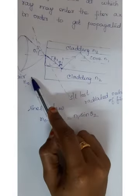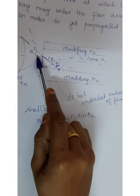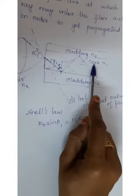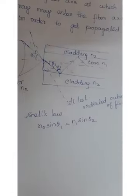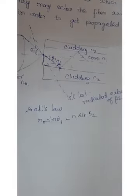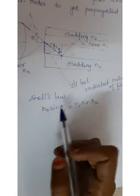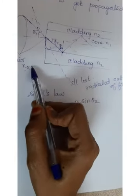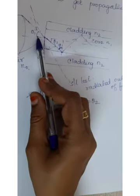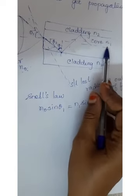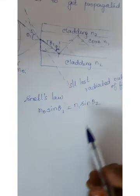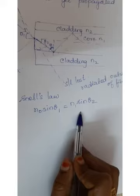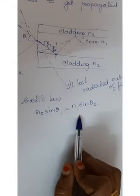In air, the angle is theta1 — this is the acceptance angle. In the core, the refractive index is N1 and the angle is theta2, which is the angle of refraction. So according to Snell's law: N0 sine theta1 equals N1 sine theta2. This is equation number 1.